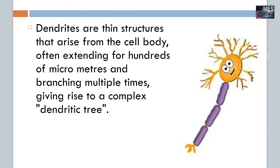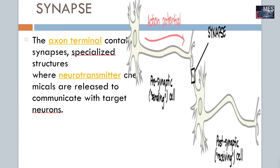Another important part of a neuron is the dendrite. Dendrites are thin structures that arise from the cell body, often extending for hundreds of micrometers and branching multiple times, giving rise to a complex dendritic tree.